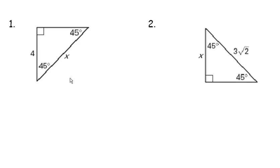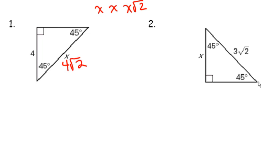Let's look quickly at 45-45-90 triangles. Remember, my pattern for the 45-45-90 is X, X, X radical 2, so the hypotenuse is just radical 2 times the leg. If my leg is 4, my hypotenuse is going to be 4 radical 2. If I know my hypotenuse is 3 radical 2, then my leg is 3, and that's how you do the 45-45-90.